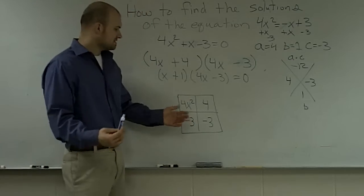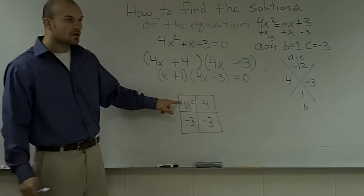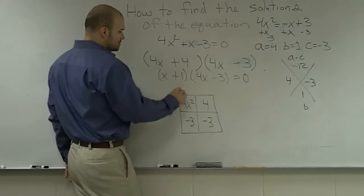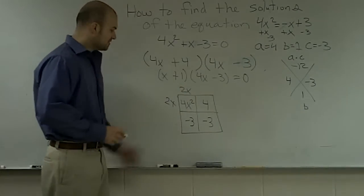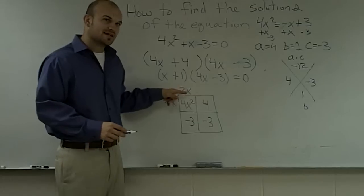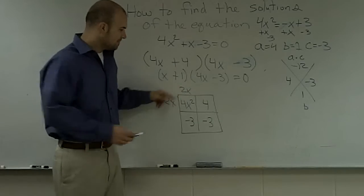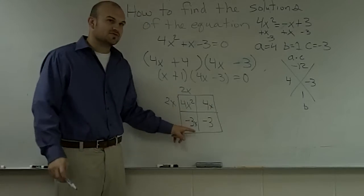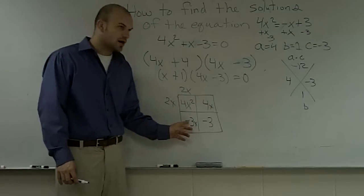Now, what I want to do is I need to determine, well, what two terms can give me the area of this box? And you could say, well, it could be 2x and 2x. However, if the width of this box is 2x, 2x times what gives you negative 3? And is that going to be a whole number? No.